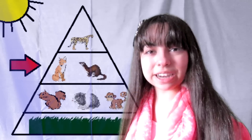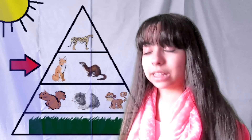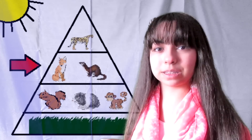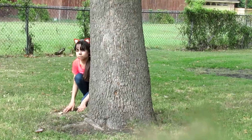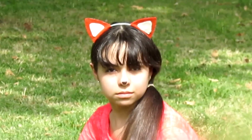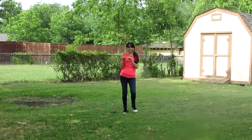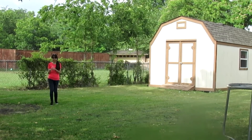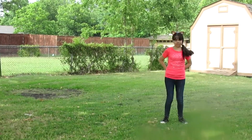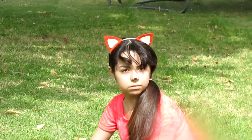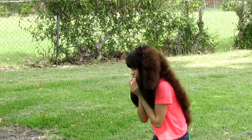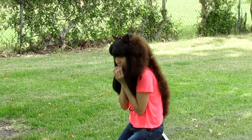The next trophic level are the secondary consumers. They are the ones that eat the primary consumers because they are carnivores. This fox ends up eating this poor, innocent squirrel.